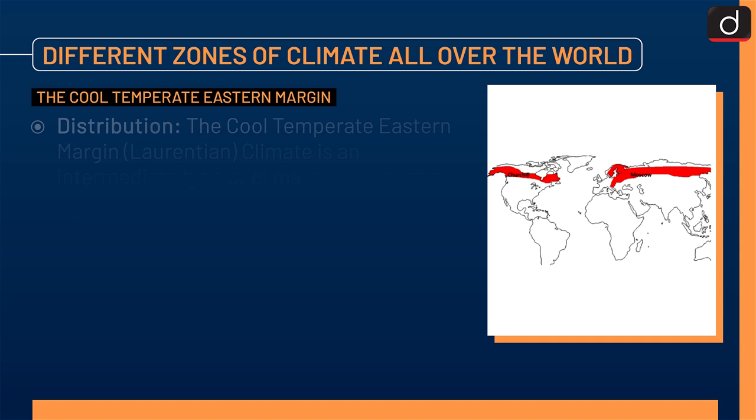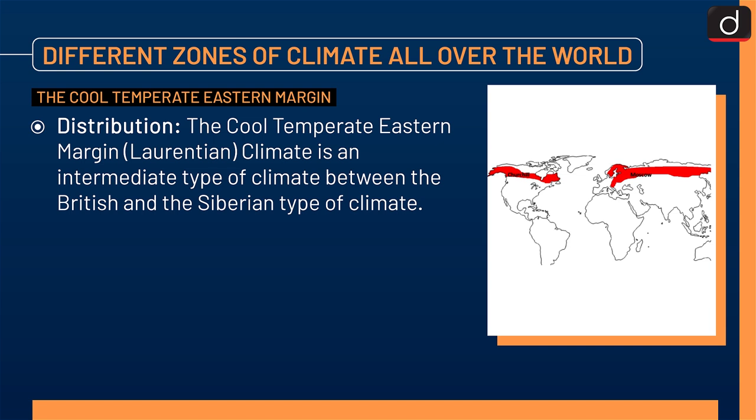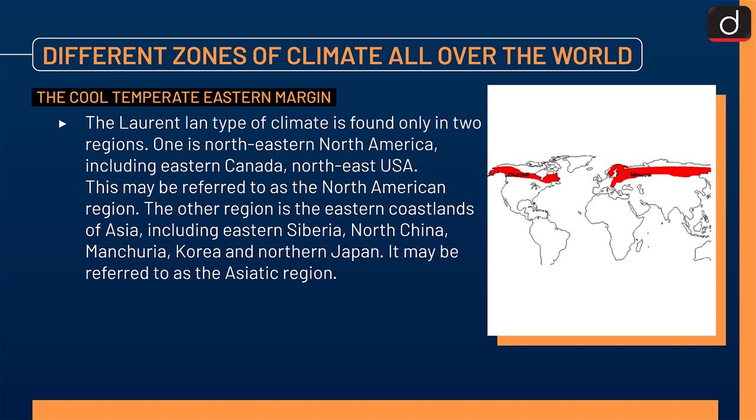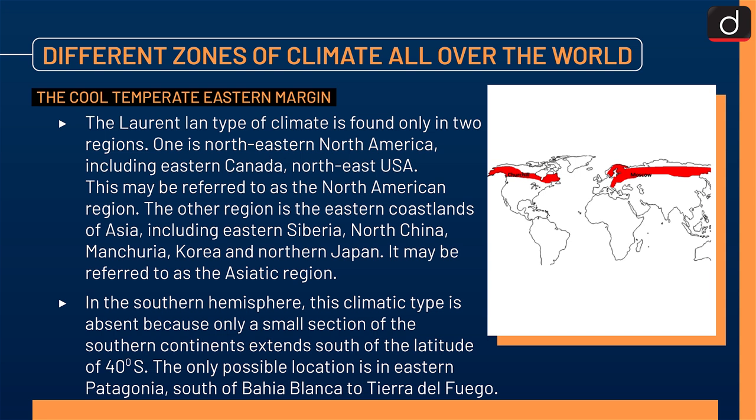The next zone is the Cool Temperate Eastern Margin or Laurentian climate. Distribution: it is an intermediate type of climate between the British and the Siberian type. It has features of both maritime and continental climates. The Laurentian type of climate is found only in two regions: one is Northeastern North America, including Eastern Canada and Northeast USA; the other is the Eastern Coastlands of Asia, including Eastern Siberia, North China, Manchuria, Korea, and Northern Japan. In the Southern Hemisphere, this climatic type is absent because only a small section of the Southern continent extends south of 40 degrees south. The only possible location is in Eastern Patagonia, south of Bahia Blanca to Tierra del Fuego.